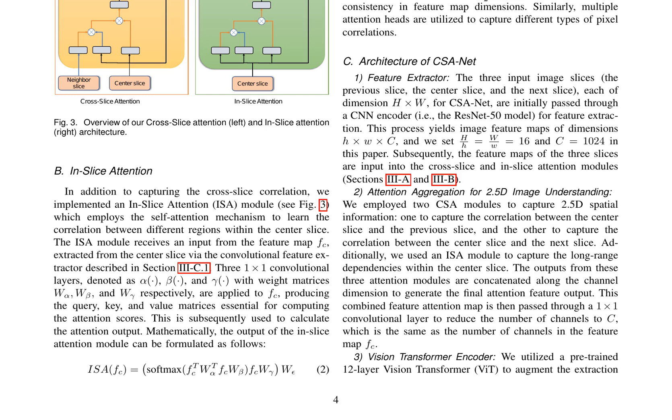CSA-NET outperforms leading 2D and 2.5D segmentation methods across three tasks: multi-class brain MRI segmentation, binary prostate MRI segmentation, and multi-class prostate MRI segmentation. The authors highlight the limitations of existing 2.5D segmentation methods and discuss the effectiveness of the cross-attention mechanism in various medical imaging applications.